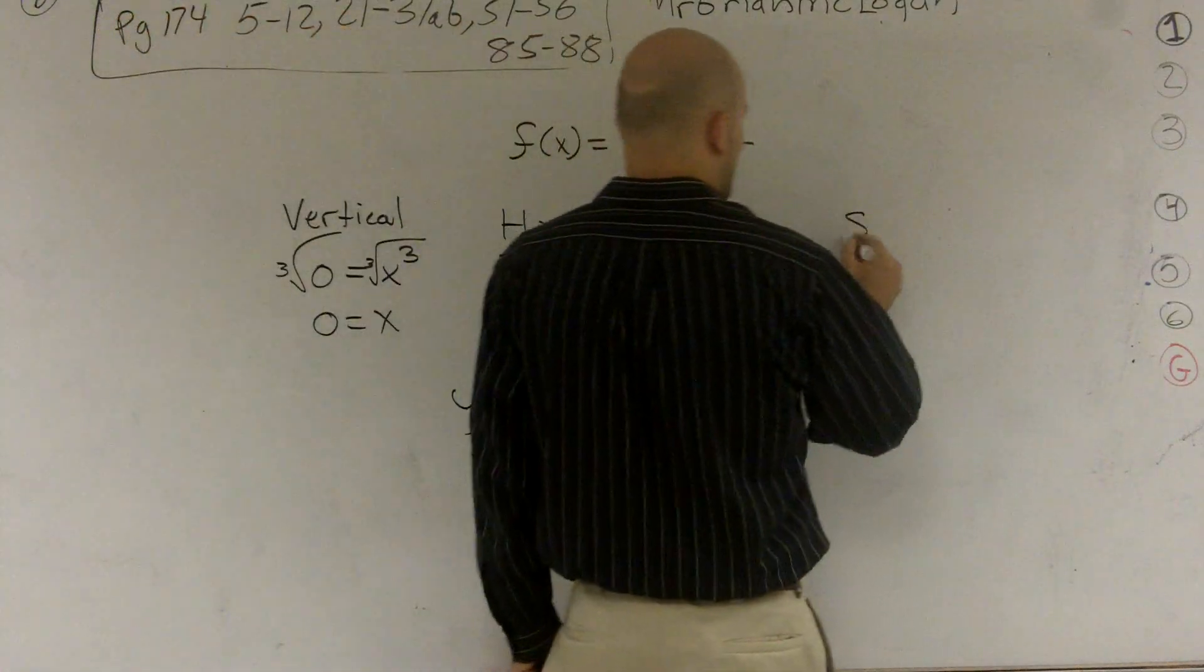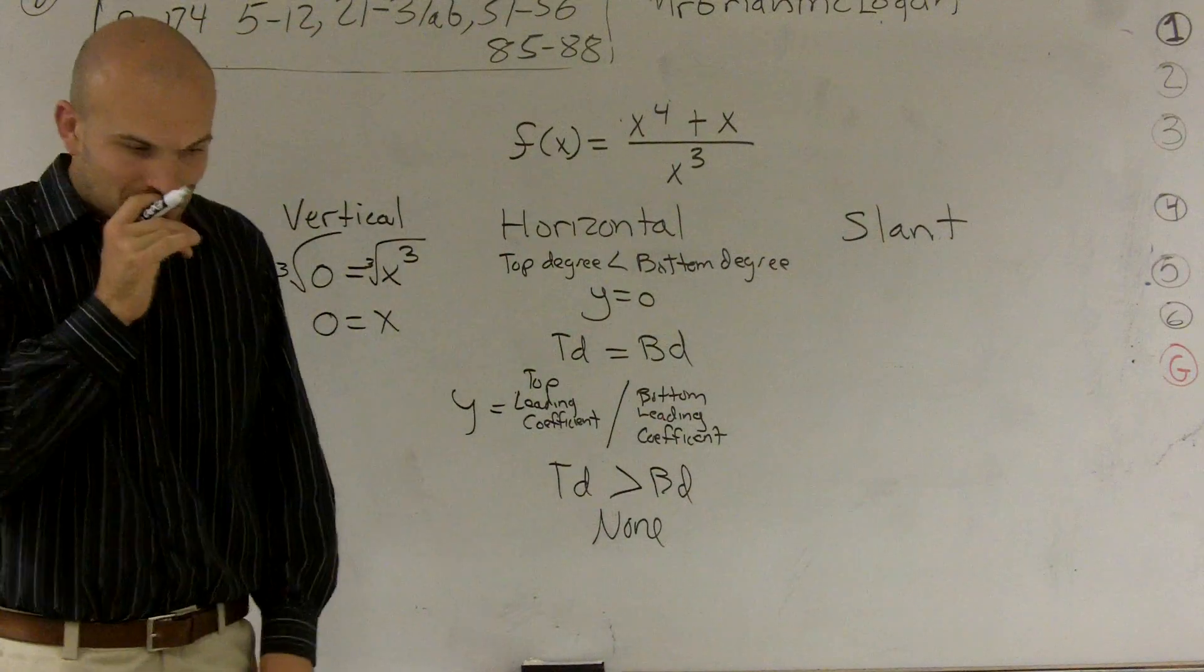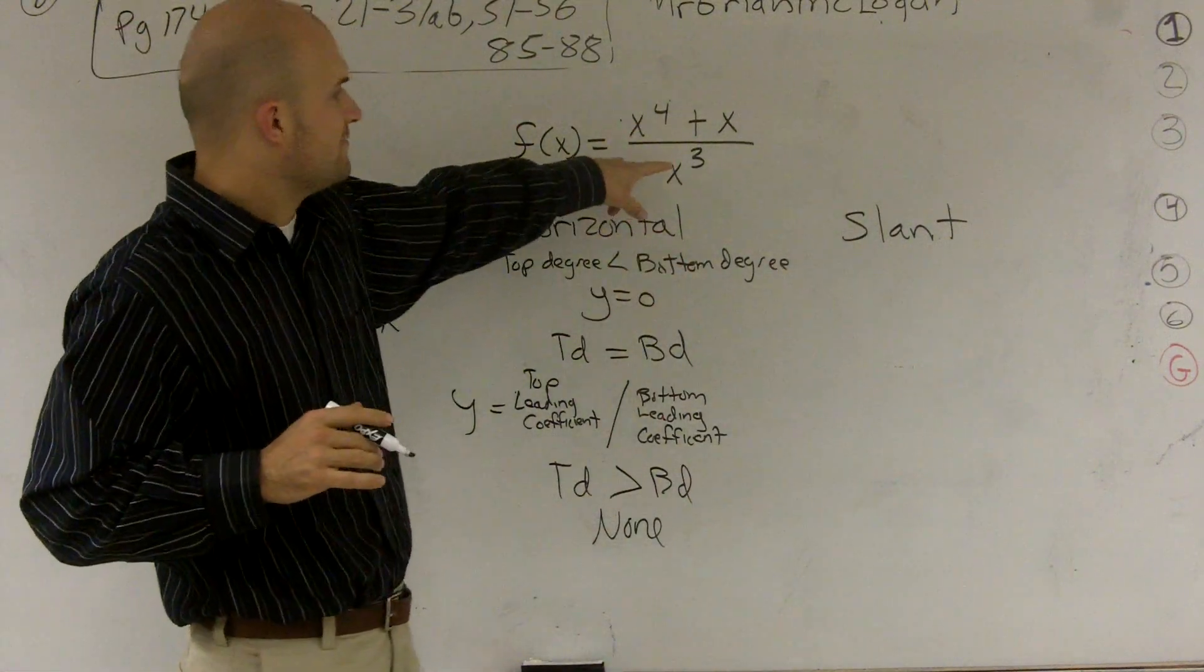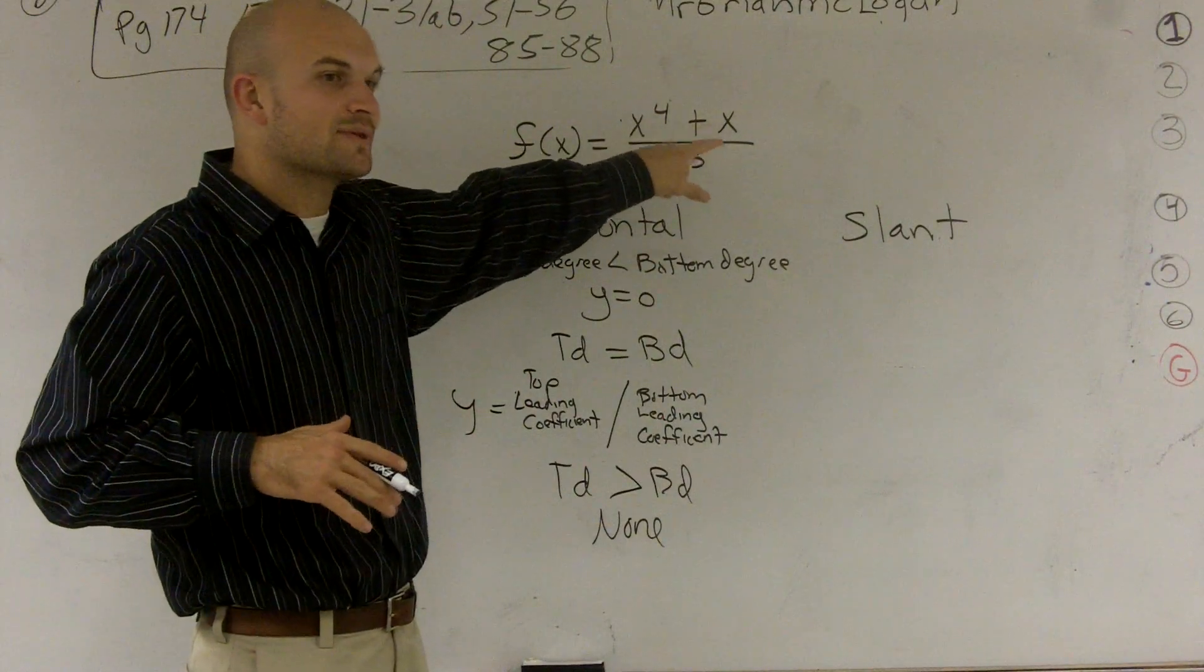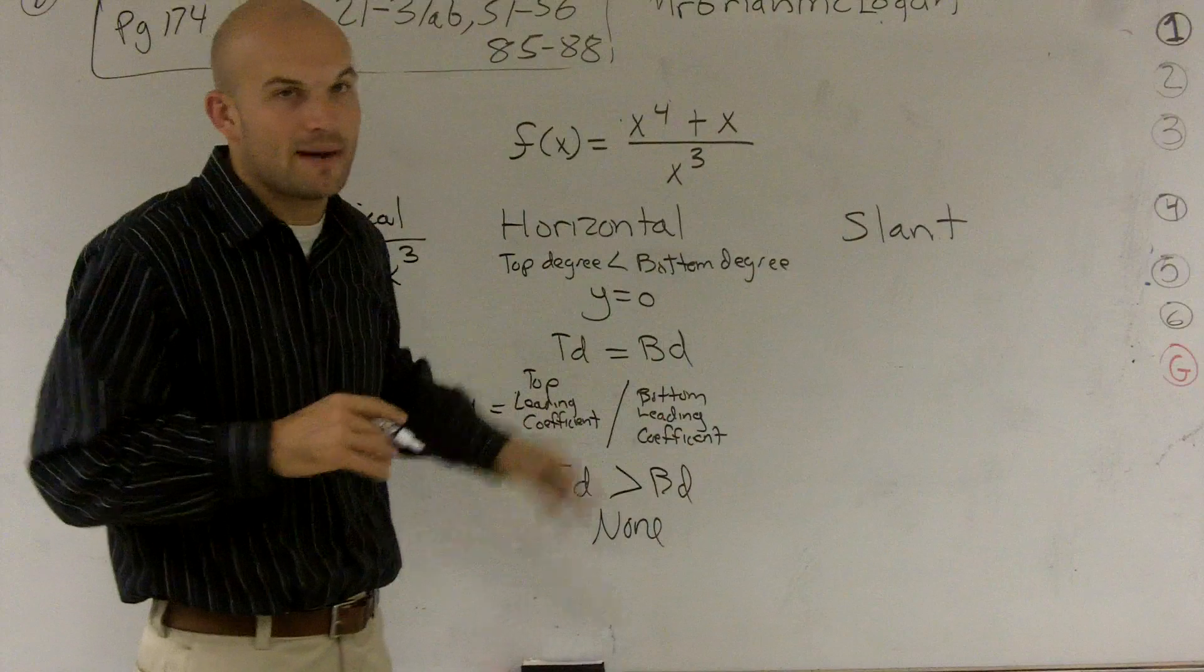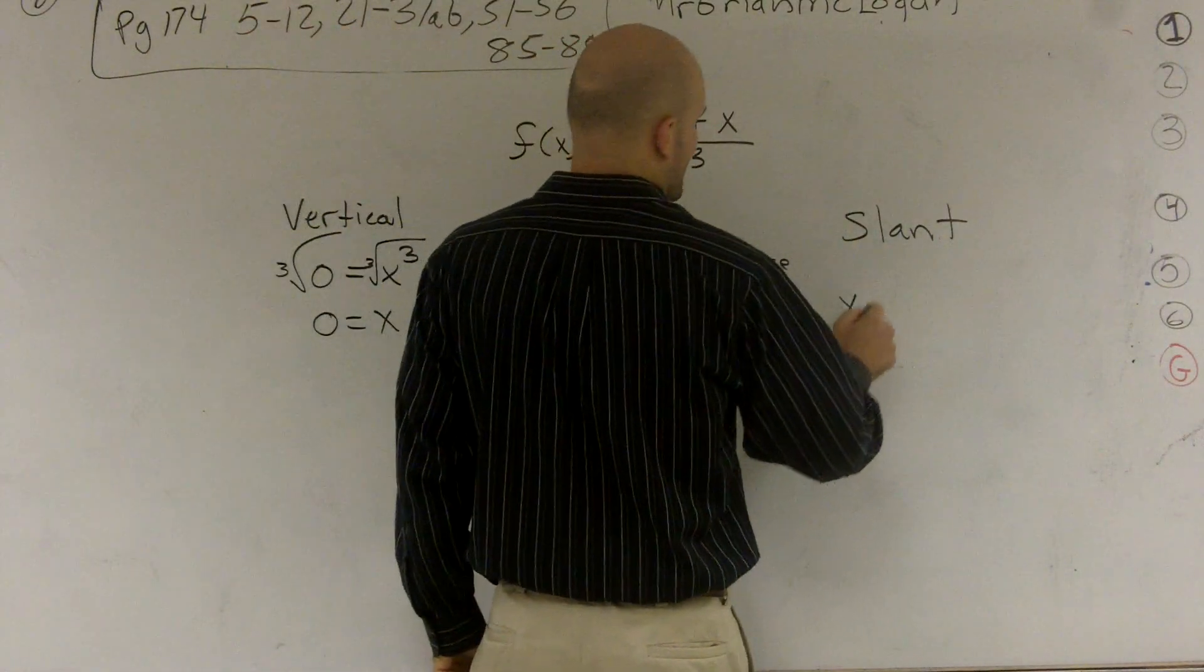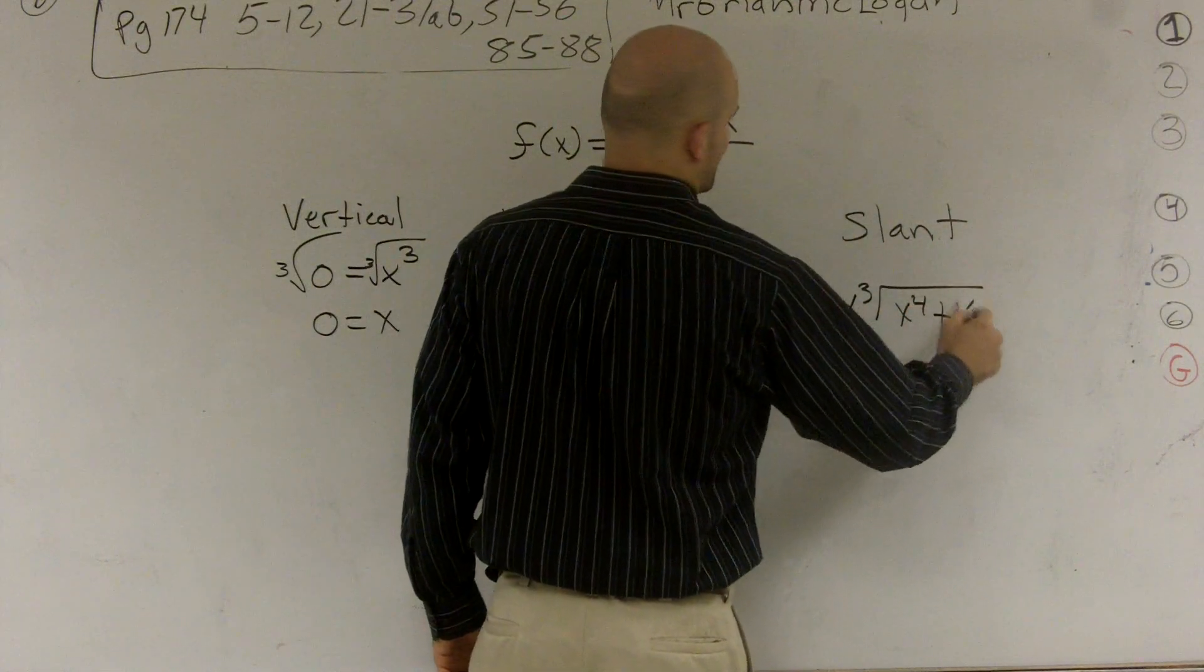So the last one is it has to be a slant. So to check out a slant asymptote, what we need to do is we need to do long division. We need to divide. See, since this has a higher degree, we know I can divide my bottom polynomial into the top polynomial. So I have x to the third over x to the fourth plus x.